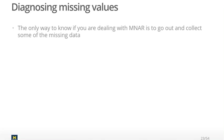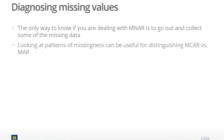If you've done a very comprehensive survey, you might argue that it's very unlikely that there's a variable you forgot that would explain the missingness. So typically, when you're trying to diagnose the missing values, you're trying to distinguish missing completely at random from missing at random — MCAR versus MAR.